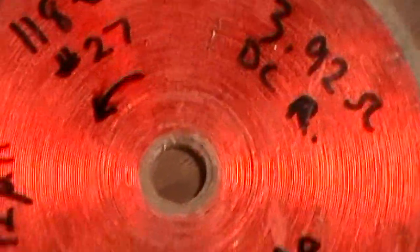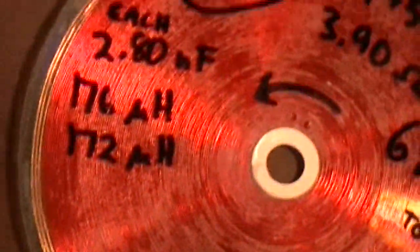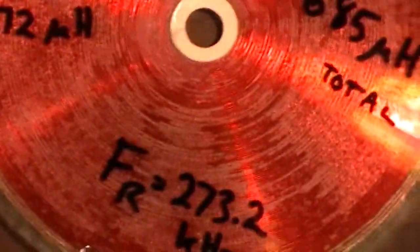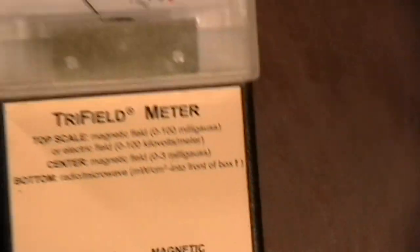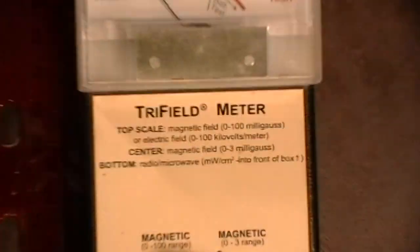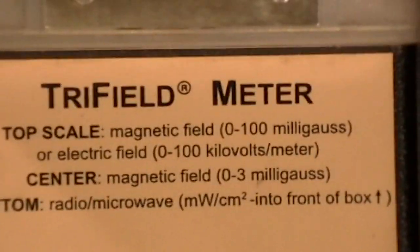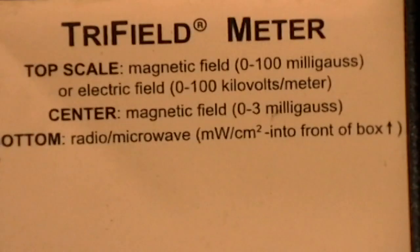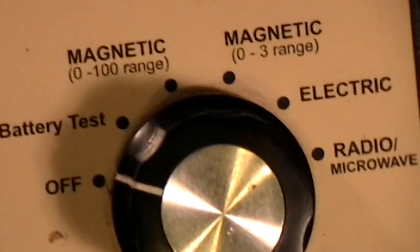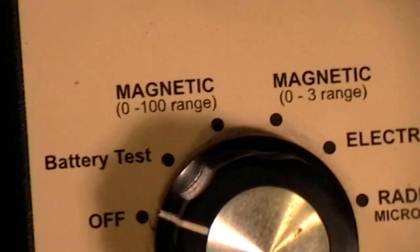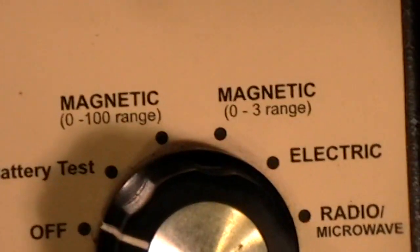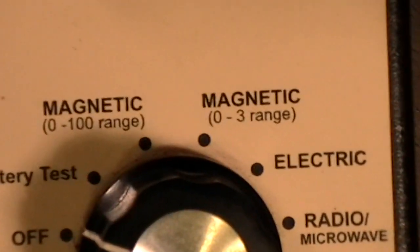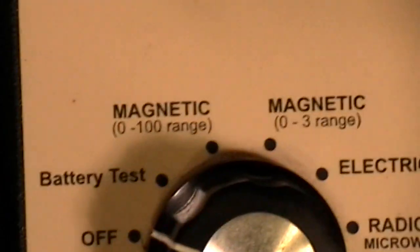It could just be because I have a tighter winding on there than I do on this miserable coil over here. And here is the trusty, dusty tri-field meter. It measures magnetic or electric fields and microwave radiation. I'll be using the magnetic 0 to 100 milligauss and magnetic 0 to 3 milligauss ranges for this test.